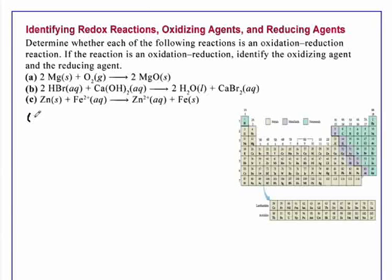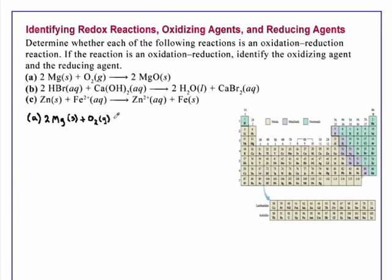In Reaction A, we have two magnesiums in solid form reacting with gaseous oxygen. In order to determine whether this is an oxidation-reduction reaction, we need to assign oxidation numbers.